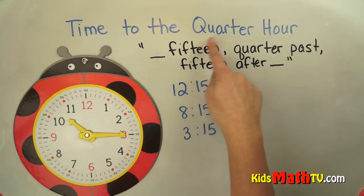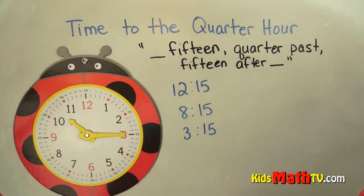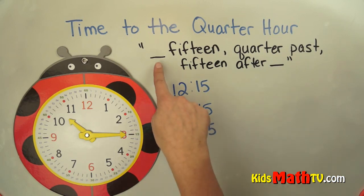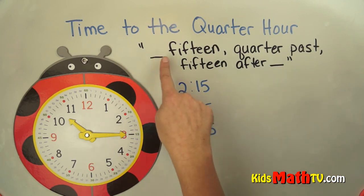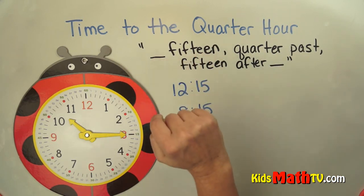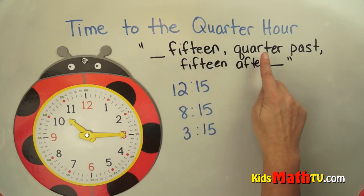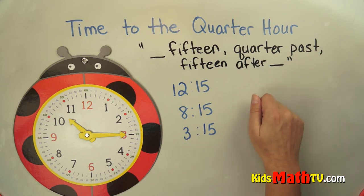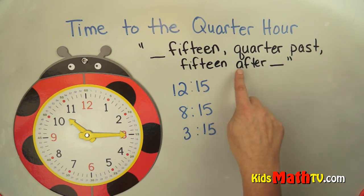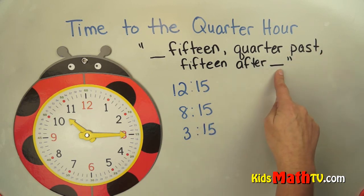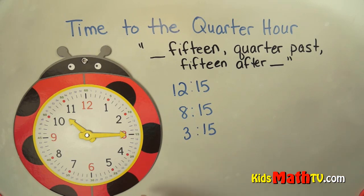We say quarter hours different ways. Some people say like 3:15, or some people might say quarter past 3, or some people say 15 after 3, or whatever hour it is.